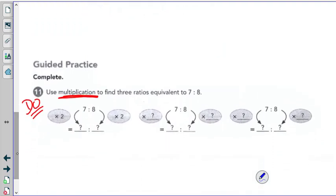I would like you to do question 11 using multiplication to find 3 ratios equivalent to 7 eighths or 7 to 8. First one, they're asking you to multiply by 2. Be creative. For the other two, you can multiply by whatever number as long as it's the same on both parts. On to the next page.